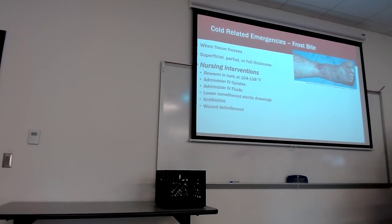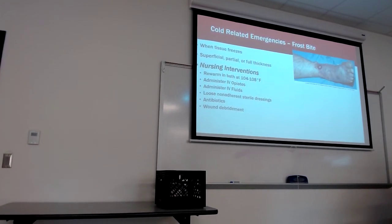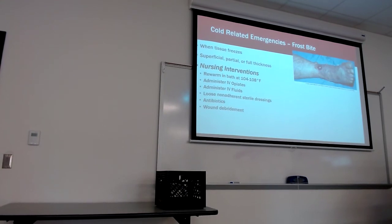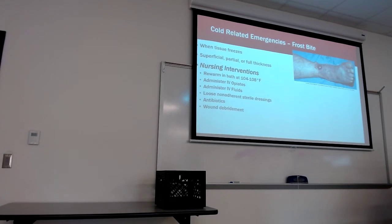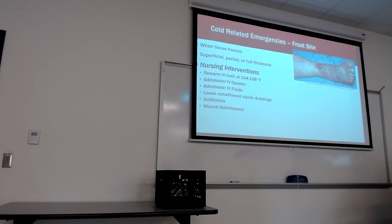Frostbite — formerly covered with burns, now in the emergency chapter. We identify frostbite the same way we identify burns: superficial, partial thickness, or full thickness. They're harder to identify because the tissue isn't missing — it's frozen. The tissue necrosis is present, but the tissue is still intact. With full-thickness thermal burns, it was depressed, blackened, tissue gone. With frostbite, tissue damage is there, but it's still intact. Rewarm using moist heat — not friction. Do not rub the frozen area; that causes additional tissue damage.